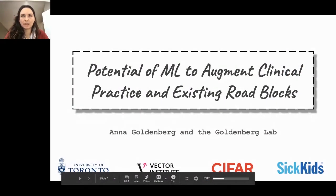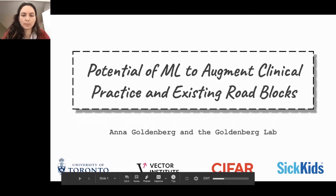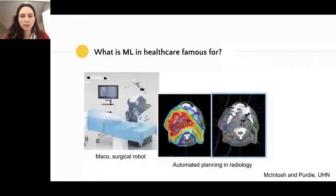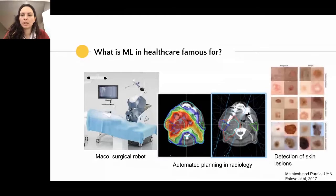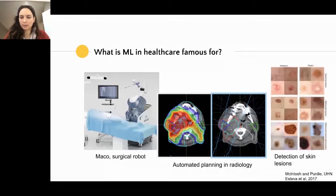Today it is my great pleasure to tell you about the machine learning advances in the field of healthcare and the remaining roadblocks and challenges that we are facing to bring it to the patients. Machine learning in healthcare is famous for many things: robotic circles already deployed, planning in radiology from U of T and UHN, detection of skin lesions, with several applications coming from Stanford and Canada. There are so many problems that require all kinds of different machine learning solutions, and that's what I will tell you about today.